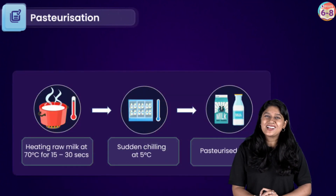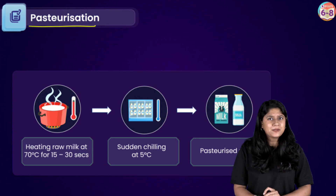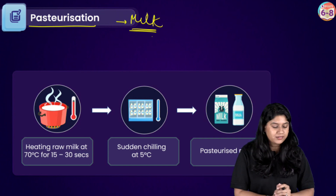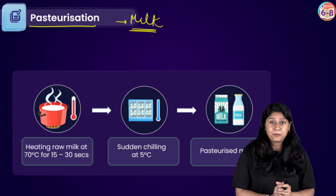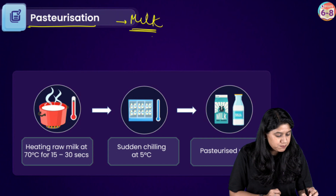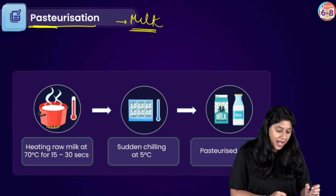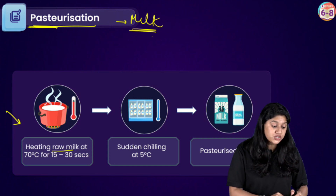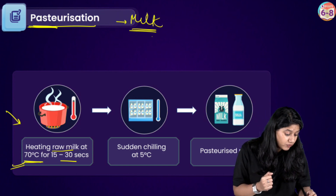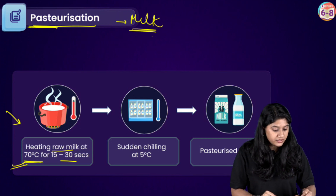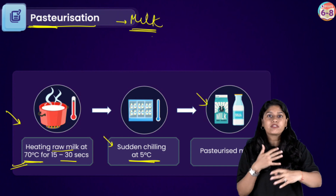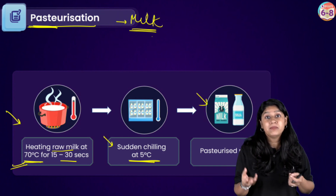The next method is pasteurization, which is super interesting and very important. It is related to milk. I'm sure you would have seen your parents boiling the milk. But before the milk comes to you in a packet, there is a particular procedure happening. When the industry has raw milk, they actually boil it at 70 degrees Celsius for 15 to 30 seconds. After that, there is a sudden chilling of the milk at 5 degrees. Once that is done, it goes for packaging, and that's how we get the tetra packs and packed milk packets.